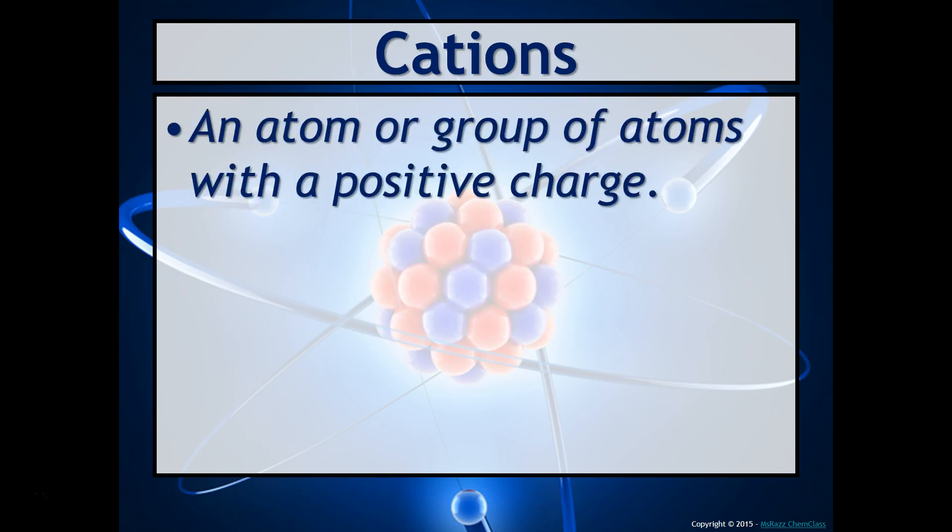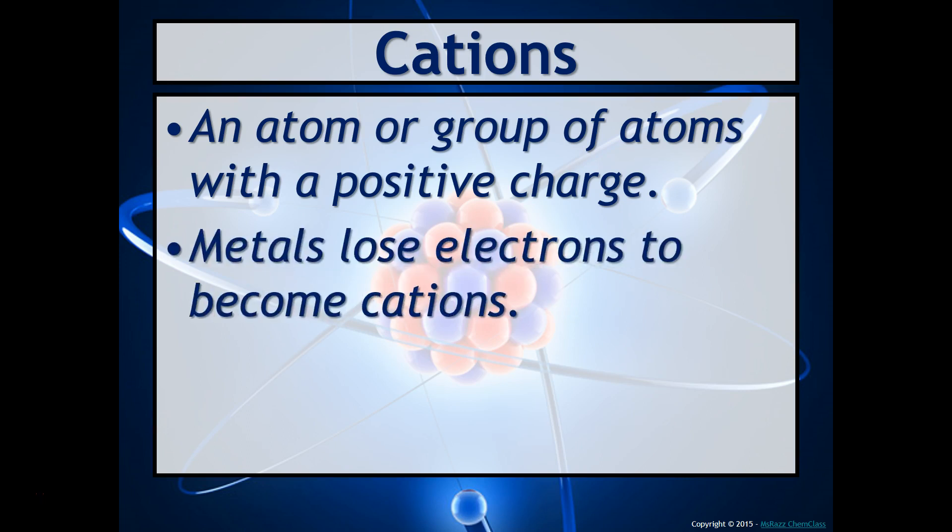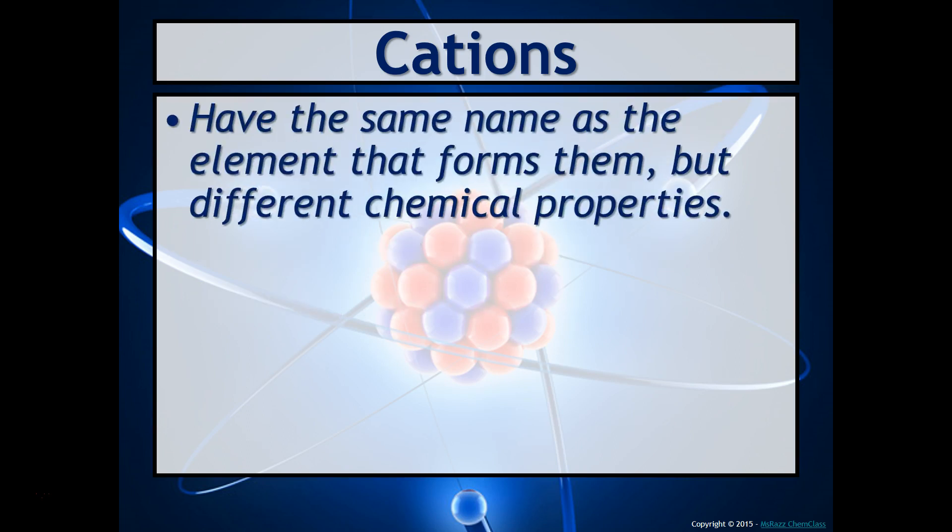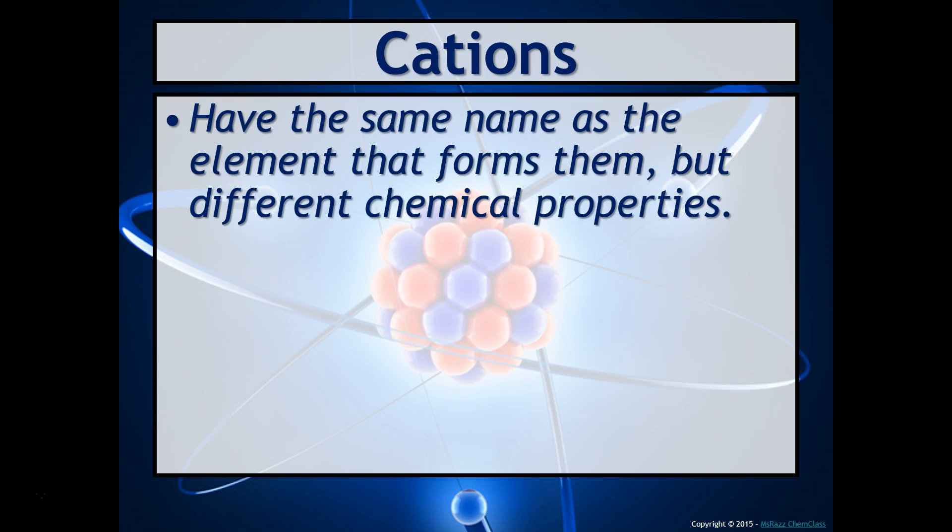Cations is an atom or group of atoms with a positive charge. Metals, on the left-hand side of the staircase of the periodic table, tend to lose electrons in order to become cations. Cations have the same name as the element that forms them, but it does have different chemical properties.